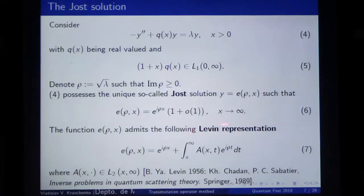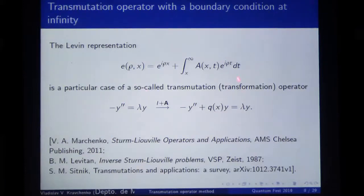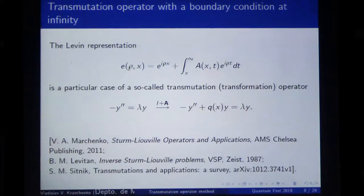The Levin representation is very good, but the problem is how to find this kernel A. What is known is that this integral operator transforms solutions of the elementary equation into solutions of the less elementary equation with the potential Q. More about this transmutation or transformation operator can be found in the book of Levitan, this survey, and many other works.